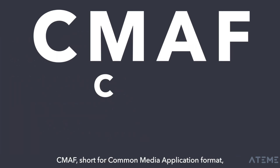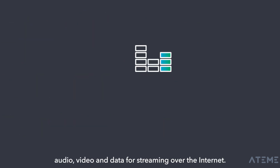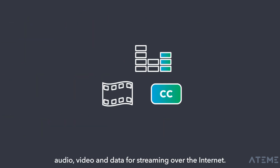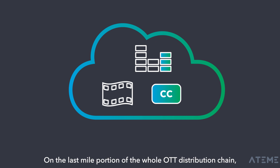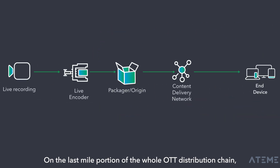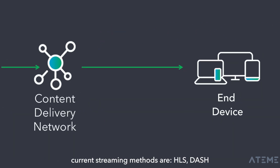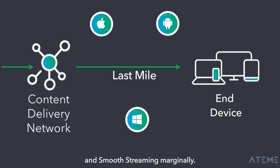CMAF, short for Common Media Application Format, is a standard for encapsulating audio, video, and data for streaming over the internet. On the last-mile portion of the whole OTT distribution chain, current streaming methods are HLS, DASH, and Smooth Streaming marginally.